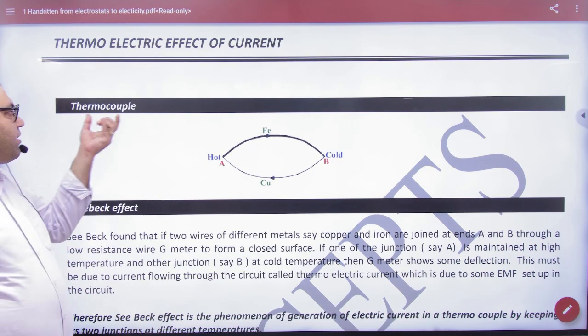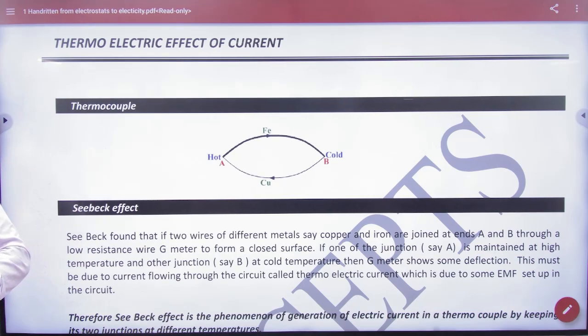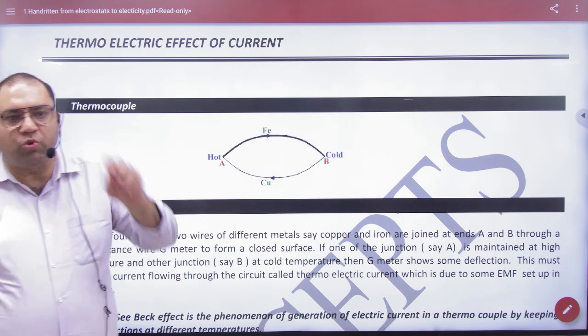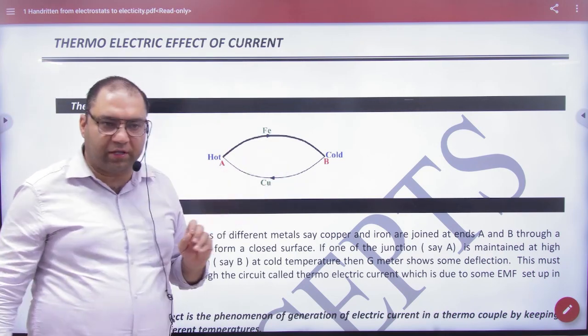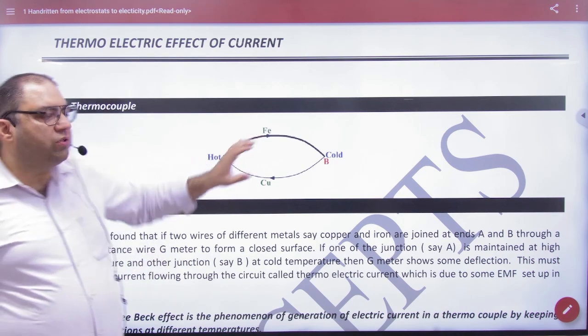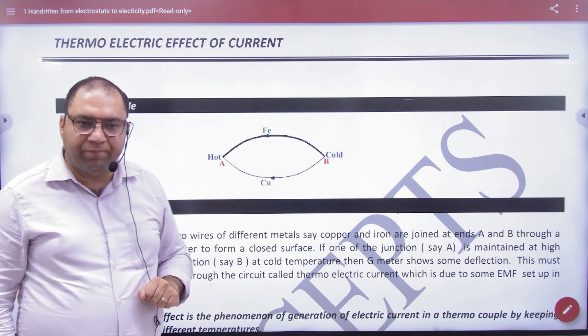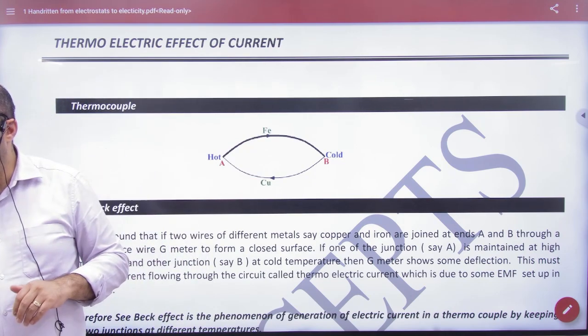We will use a term called thermocouple. If I join two different material wires, this junction, this arrangement is called thermocouple. The material should be different, such as iron and copper, gold and copper - this is thermocouple.